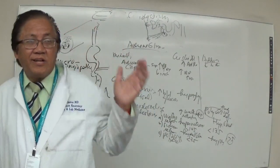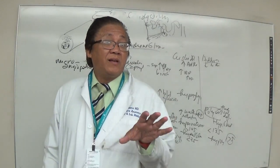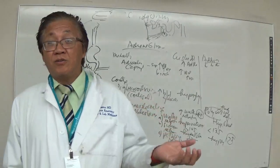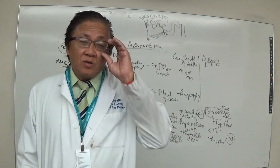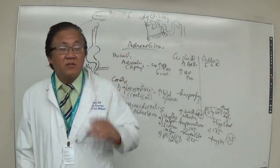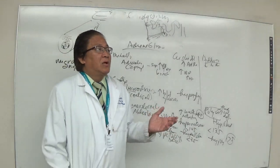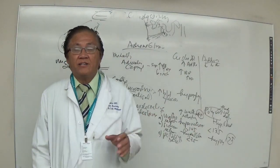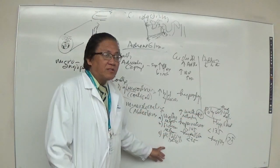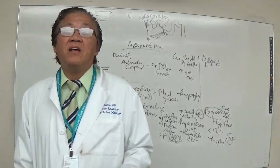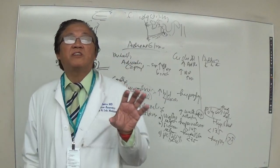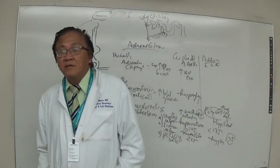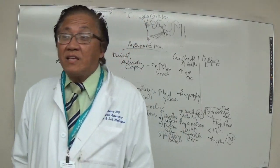This knowledge is essential for the nursing board exam. For example, bananas contain potassium — so who benefits from a banana? Cushing's patients, because their blood potassium is low. Do not give bananas to Addison's patients, whose potassium levels are already high, as this could cause hyperkalemia and cardiac arrest.